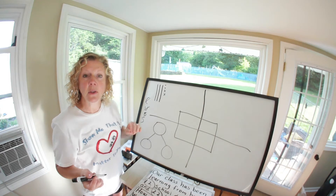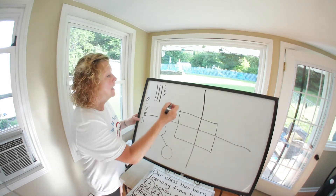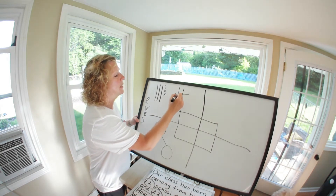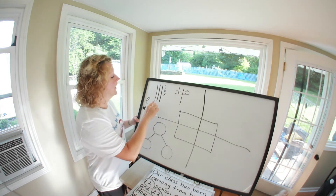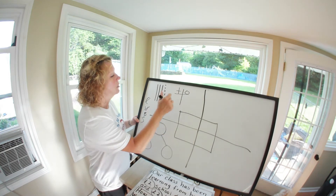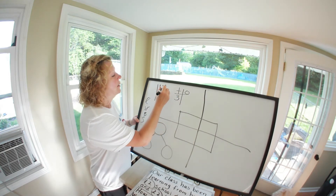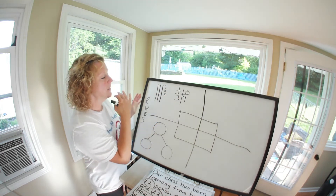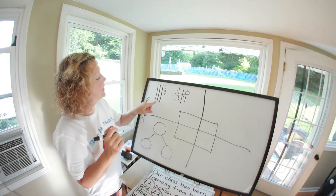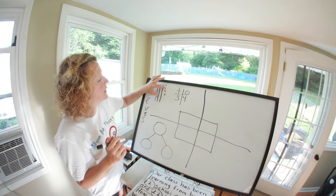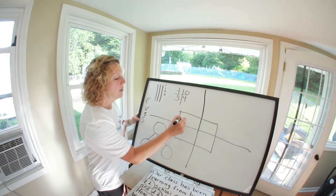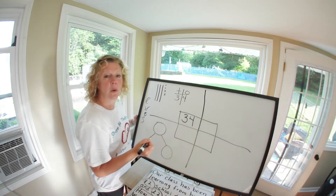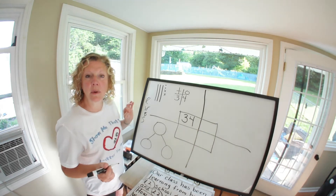Now I can go ahead and count it. I'm going to use our tens and ones frame over here. I have 1, 2, 3 tens and 1, 2, 3, 4 ones. So if I count: 10, 20, 30, 31, 32, 33, 34. So 34 is my answer.